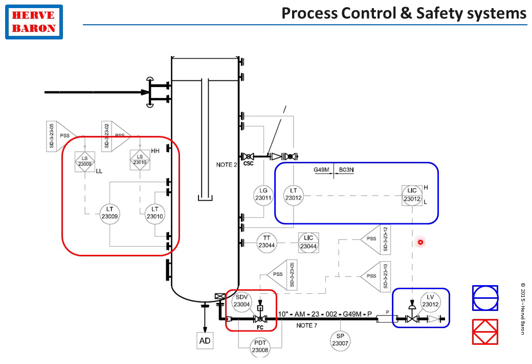As you can see, the process control system instruments, shown in blue, and the process shutdown system instruments, shown in red, are different instruments. Each system has its own instruments and controllers, so that the process shutdown system serves as a protection — and backup — in case of failure of the process control system. They don't share any instruments.